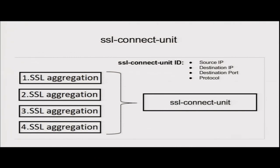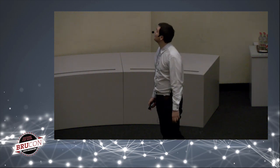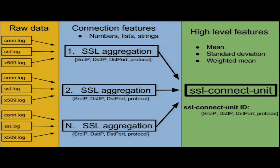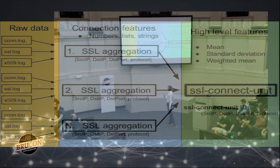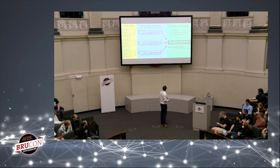From the SSL aggregation we create the SSL connect unit. An SSL connect unit is a group of SSL aggregations sharing the same source IP, destination IP, destination port, and protocol — it describes a connection independent of time. The SSL connect unit contains high-level features. For example, each SSL aggregation has a duration, so one SSL connect unit with three aggregations has three duration values from which we compute the mean, standard deviation, or weighted mean.